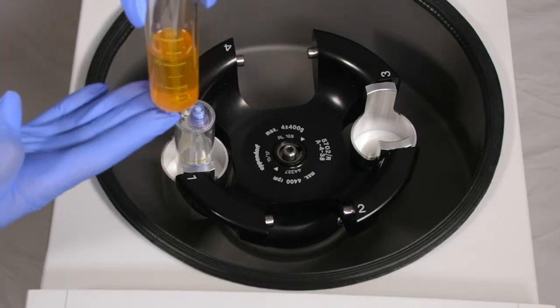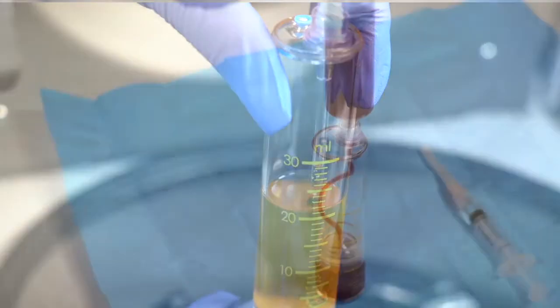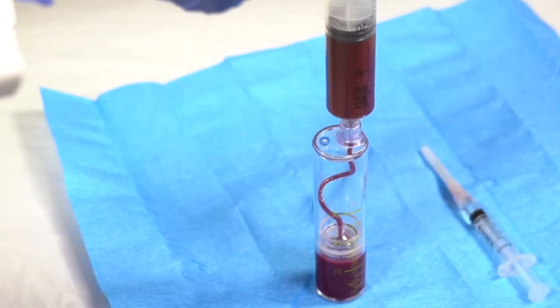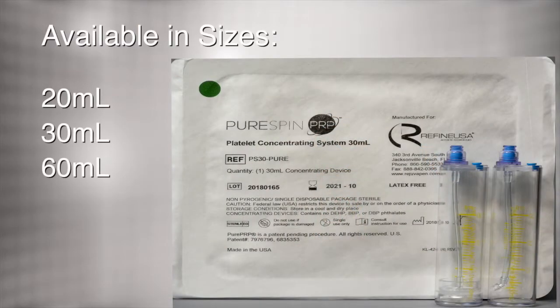The PureSpin's intended use is for the safe and rapid preparation of autologous platelet-rich plasma PRP from a small sample of blood at the patient point of care. PureSpin PRP kits are available in various sizes for all of your clinical needs.